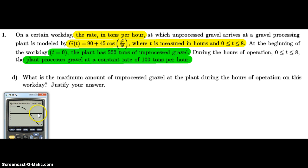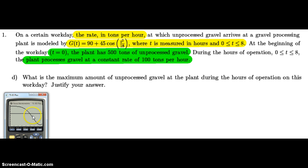As long as g of t is greater than 100, the amount of unprocessed gravel at the plant is increasing. At the point where they're equal, the plant is processing just as much gravel as is coming in. After that point, for the remainder of the plant's hours all the way to t equals 8, g of t is less than 100 and the amount of unprocessed gravel is decreasing. So the maximum amount of unprocessed gravel occurs right at that intersection point. The pile starts at 500 tons, grows while gravel arrives faster than it's processed, then reduces once the processing rate exceeds the arrival rate.